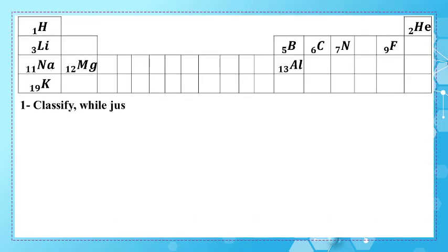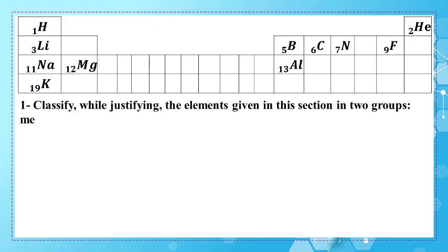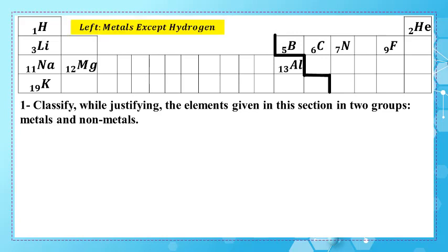In number one, we have to classify — while justifying — the elements given in this section into two groups: metals and non-metals. We know that the stair-step line helps us in classifying the elements, where the elements to the left of the stair-step line, except hydrogen, are metals, and elements to the right of the stair-step line are non-metals.